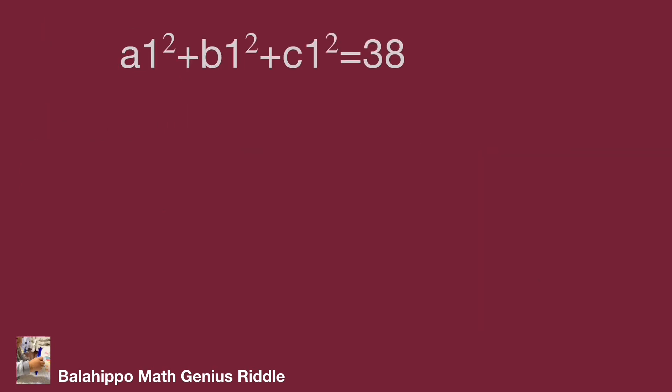Check the new equation. There are three integer square values. The sum is 38. Which value will be? We list 1 to 6 square values. They are all less than 38. Match the sum of three numbers equal to 38. Fortunately, we find 4, 9 and 25.